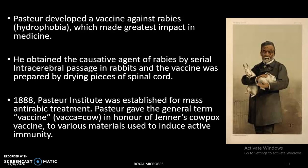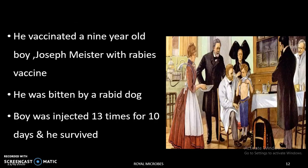Later he discovered the rabies vaccine, which made the greatest impact in the field of medicine. He found that the causative agent of rabies can be attenuated by intracerebral passage in rabbits, and the vaccine was prepared by drying pieces of spinal cord. In 1888, the Pasteur Institute was established for mass anti-rabies treatment. Pasteur gave the general term 'vaccine' in honor of Edward Jenner. The rabies vaccine was first introduced into a nine-year-old boy, Joseph Meister, who was bitten by a rabid dog; he was injected 13 times over 10 days and survived.